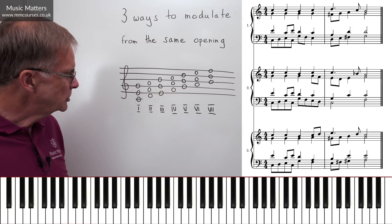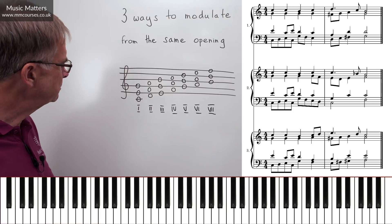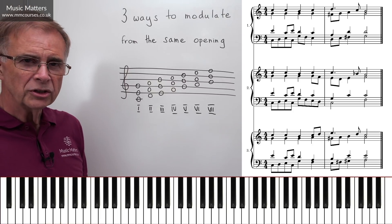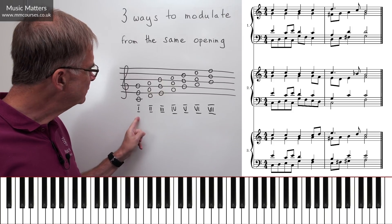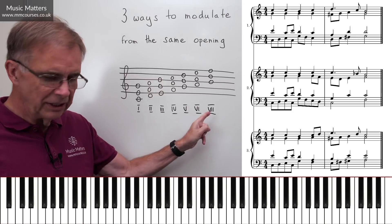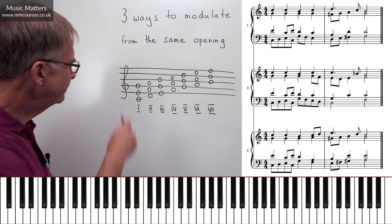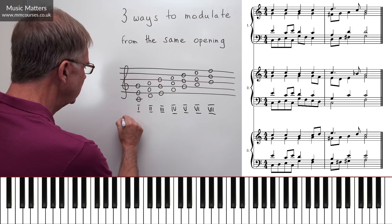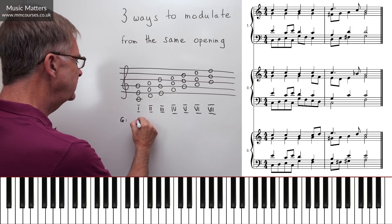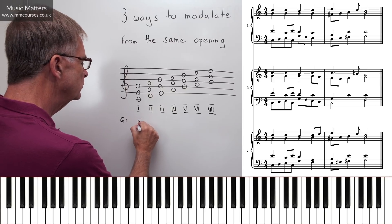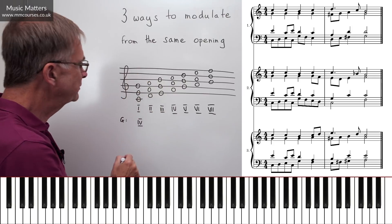We're starting in C major, so here are the chords for the key of C major. If we're modulating to G major, we need to ask which of these chords also appears in G major. Chord I in C major is also chord IV in G major, so that could be a pivot chord.